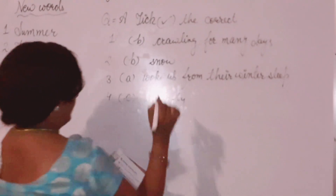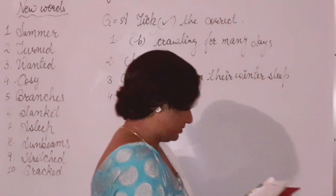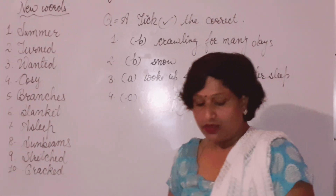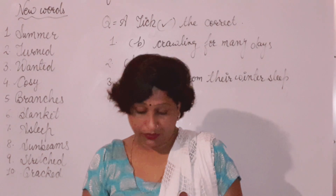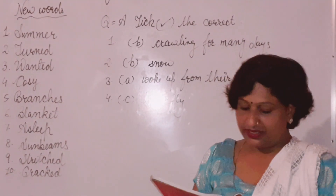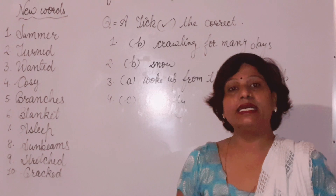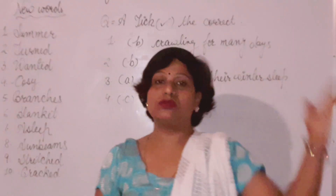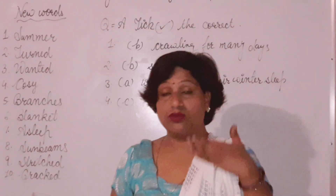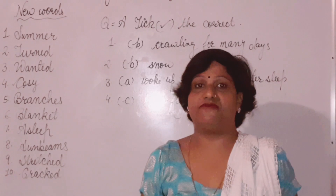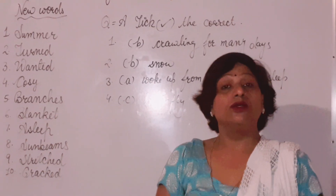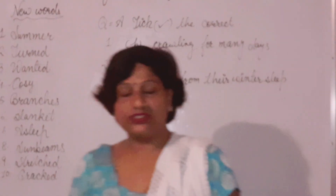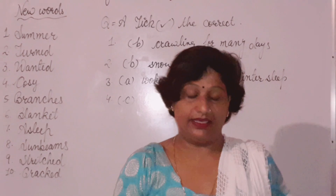Now I am telling you the question answers of this chapter. Question one: What did Jo do when she became very tired? When Jo became very tired, she made a cozy blanket in the branches of a grapevine. Question two: When was Jo feeling sleepy? Jo was feeling sleepy when the winter came.